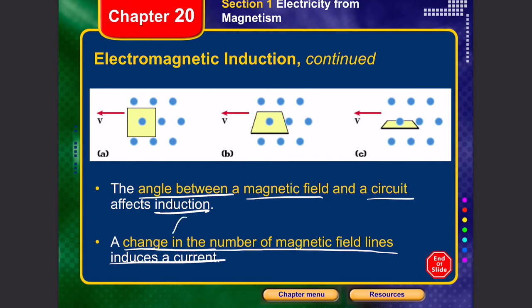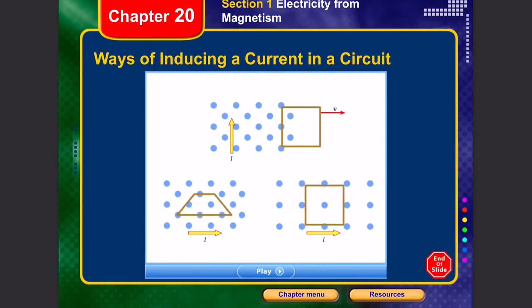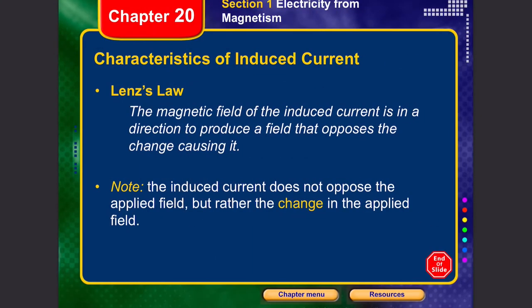What we are trying to do is change the number of magnetic field lines that cut through a certain area of a loop. For example, if this is the loop and the magnetic field is poking out of the page, and the loop is traveling with velocity v, that can induce a current. These are all the ways of inducing a current.